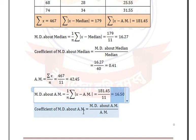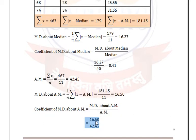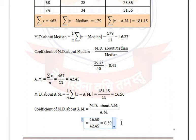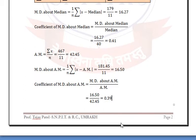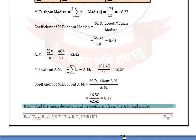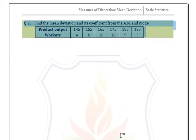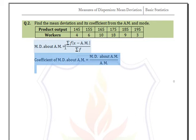The coefficient of mean deviation about arithmetic mean = 16.50/42.45 = 0.39. Now let's see another example with frequency distribution. We have to find mean deviation and its coefficient from the arithmetic mean and mode. The formula for mean deviation about arithmetic mean is Σf|x - arithmetic mean| / Σf.